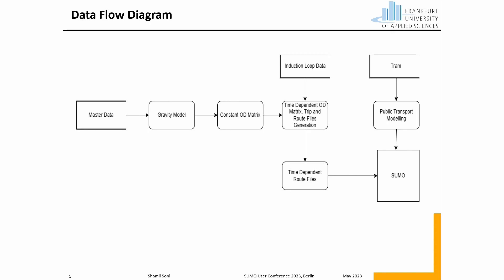This constant origin-destination matrix contains 24 hours of aggregated vehicular data, and to split them into time-dependent origin-destination matrix and trip and route files, induction loop data was used. This induction loop data, in addition to OD2 trips and DuaRouter, generated time-dependent route files which were finally fed into SUMO. In addition to this, there were trams which were modeled using the public transport modeling provided by SUMO, and this tram was set at a frequency of 10 minutes.